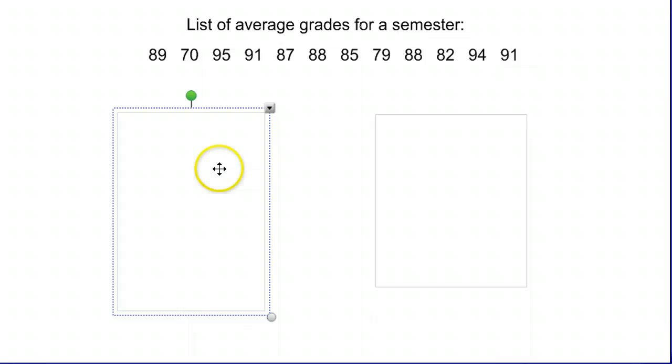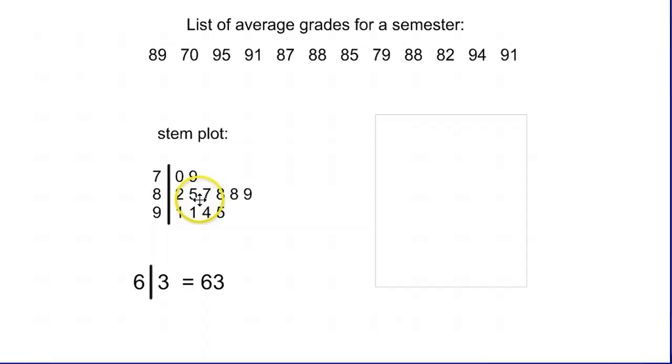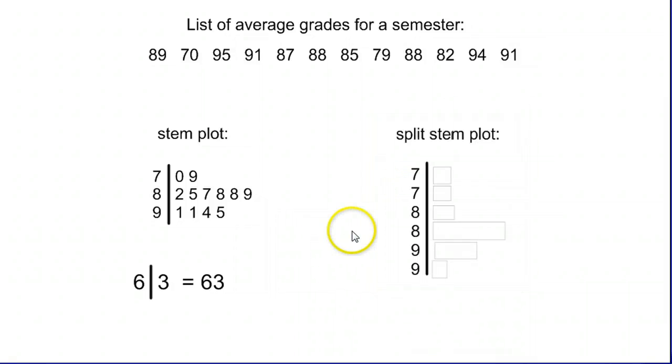One other thing that can happen with stem and leaf plots, depending on how your distribution falls, is you might end up with a list where it's all bunched up into only three stems with a whole bunch of leaves. If that happens and you want to get a more detailed view of what's going underneath, you can create something called a split stem plot.